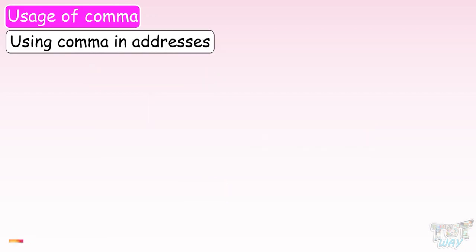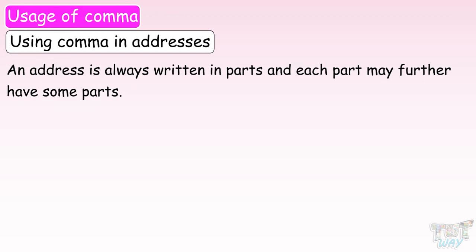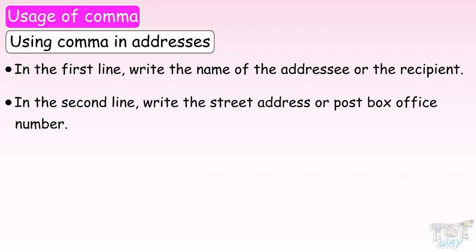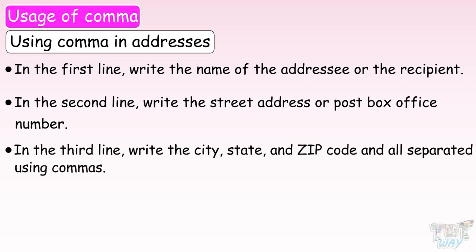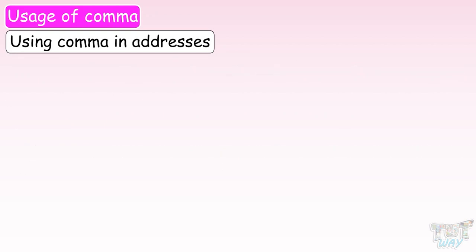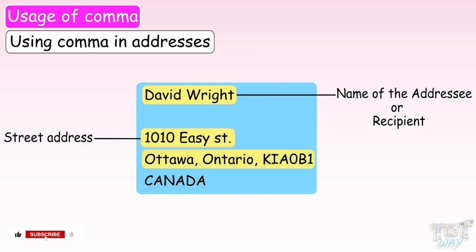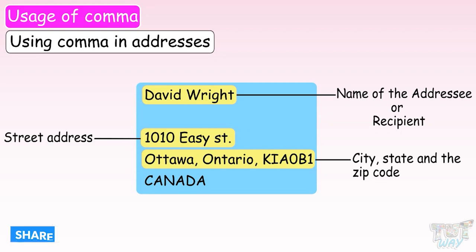Now let's learn how we use commas while writing addresses. As you know, an address is always written in parts. In the first line, always write the name of the addressee or recipient. In the second line, write the street address or post office box number. In the third line, write the city, state and zip code — all separated using commas. Here we have an example address showing the name, street address, city, state and zip code separated by commas, and the country name on the last line.